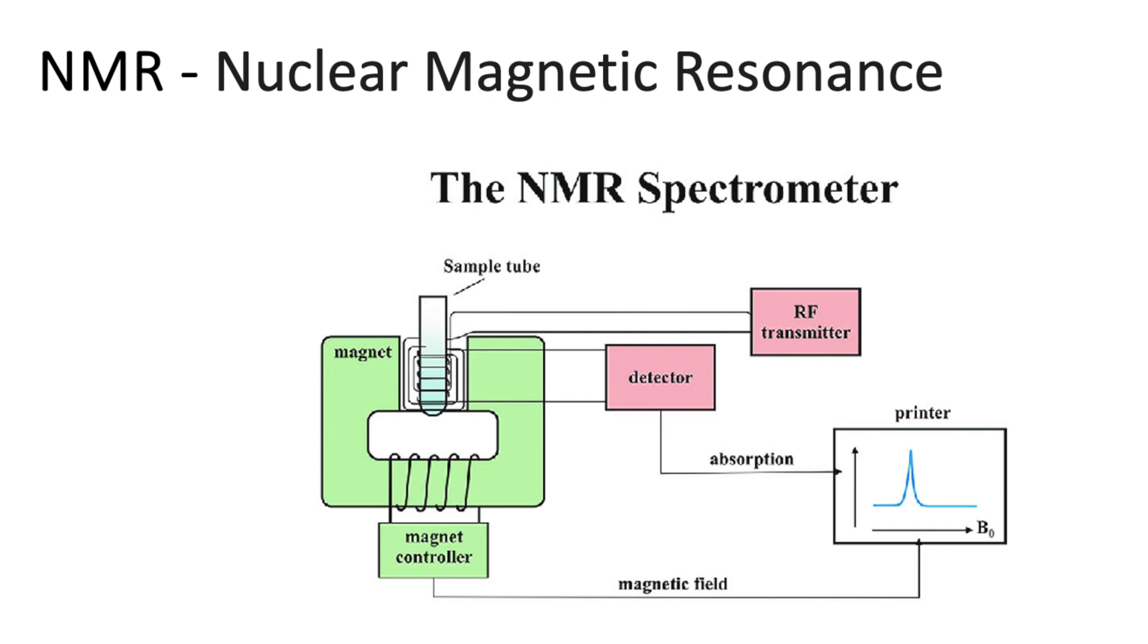Now on to nuclear magnetic resonance, NMR. It works by exploiting magnetic properties of certain atomic nuclei, particularly those with odd numbers of protons and neutrons, such as hydrogen-1 and carbon-13. These nuclei align with or against a strong magnetic field. When radio frequency pulses are applied, they temporarily disrupt this alignment, and the nuclei returns to its original state. They emit a signal that can be detected and analyzed to reveal information about the molecular structure and environment of the molecule.